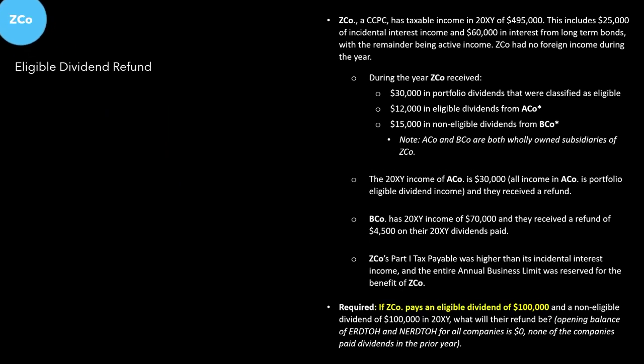The eligible dividend refund is going to be the lesser of two amounts. The first amount, as of this recording, is 38⅓% of the amount of the dividend. The eligible dividend was $100,000, so the math gives us $38,333, rounded to the nearest dollar. The second amount in this lesser-of calculation is the eligible RDTOH balance, which we weren't given — so we have to solve for that. Let's draw out ZEDCO's eligible RDTOH account, with a question mark at the bottom because we don't know that number yet.